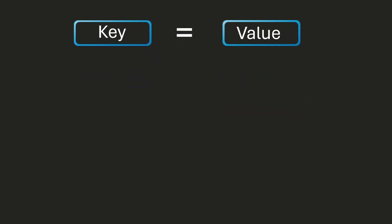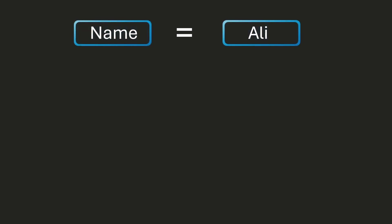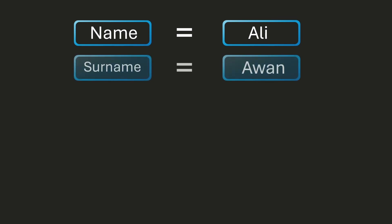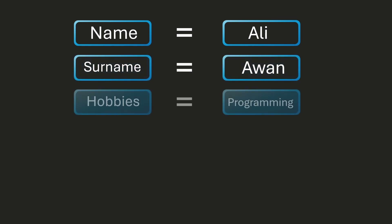How would a key-value pair be used? We have dictionaries to store a collection of key-value pairs. So let's say I have a name — for example my name is Ali — and I want to add my surname, so I've got 'surname' and then I can have my hobbies like 'programming'.